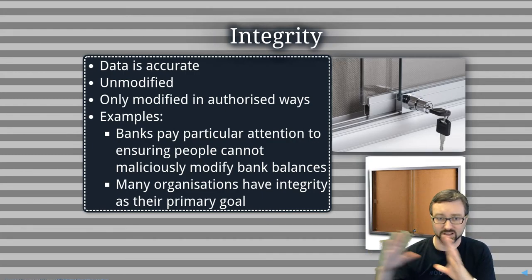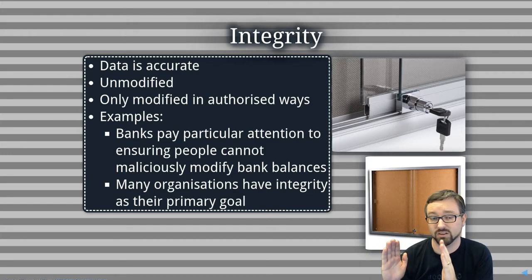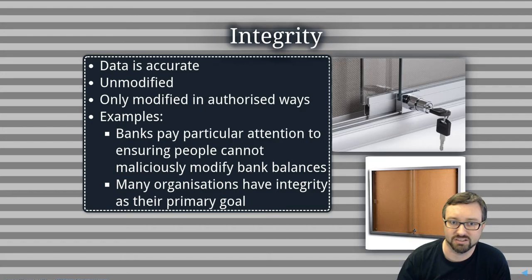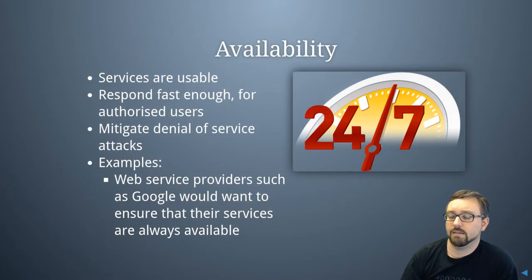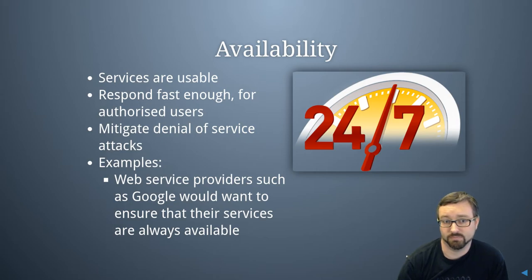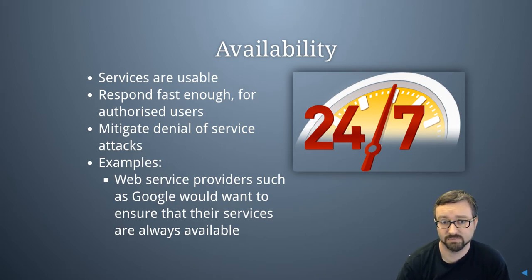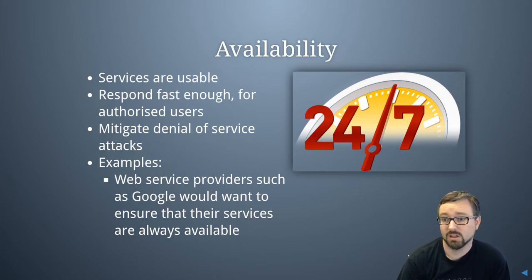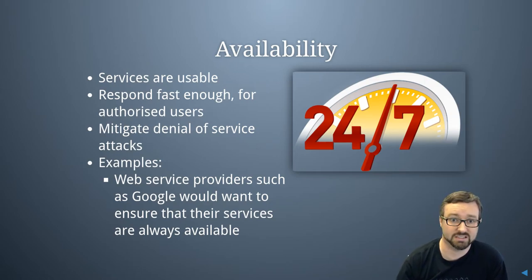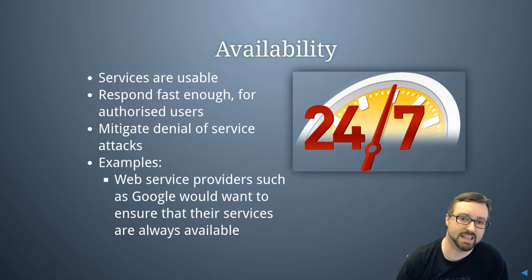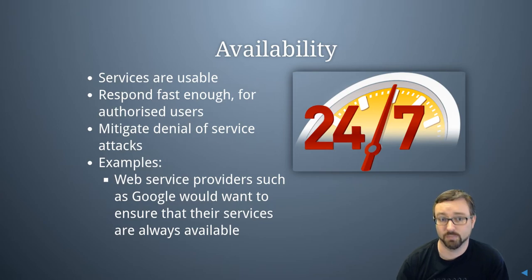An example of integrity is when you see a bulletin board with a locked screen. Integrity isn't about who can read the information; it's about who can get in there and change those notices. Availability is the third part of the triad, and that's about whether or not people can actually access things. Are the services available? Are they usable? Are they responding quickly enough in order for people to access them? If someone can take down our server so that no one can access it, that's bad, and our goal is to be available.